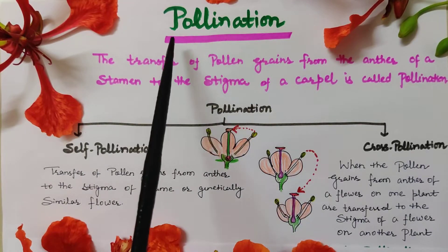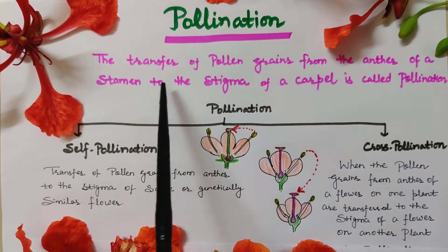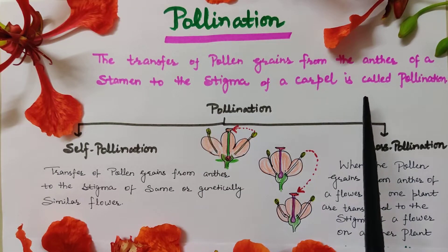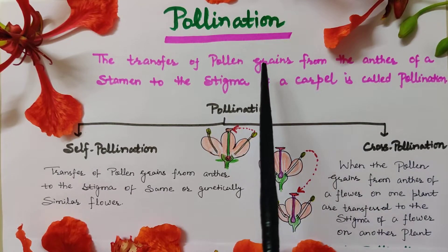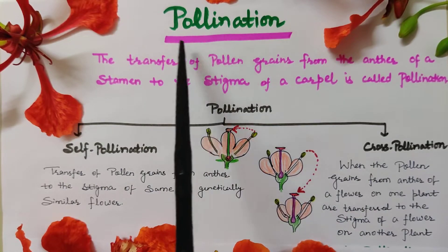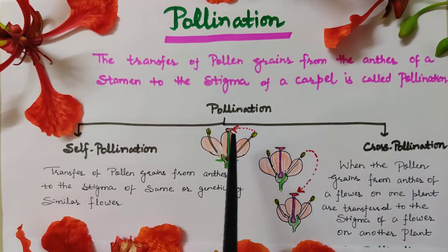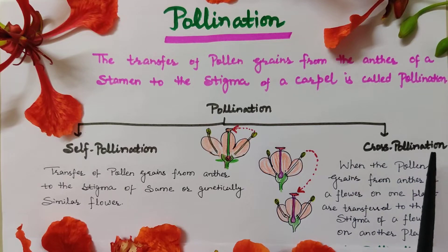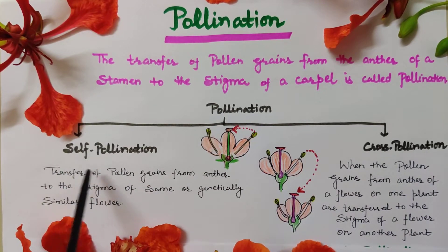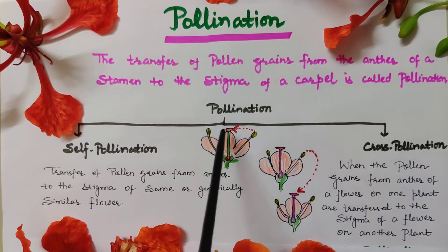Now, pollination. What is pollination? Transfer of pollen grains from the anther of the stamen to the stigma of the carpel is called pollination. This occurs before the fusion of gametes, i.e., before fertilization. Pollination is of two types: self-pollination and cross-pollination. Self-pollination means transfer of pollen grains from the anther to the stigma of the same or genetically similar flower.